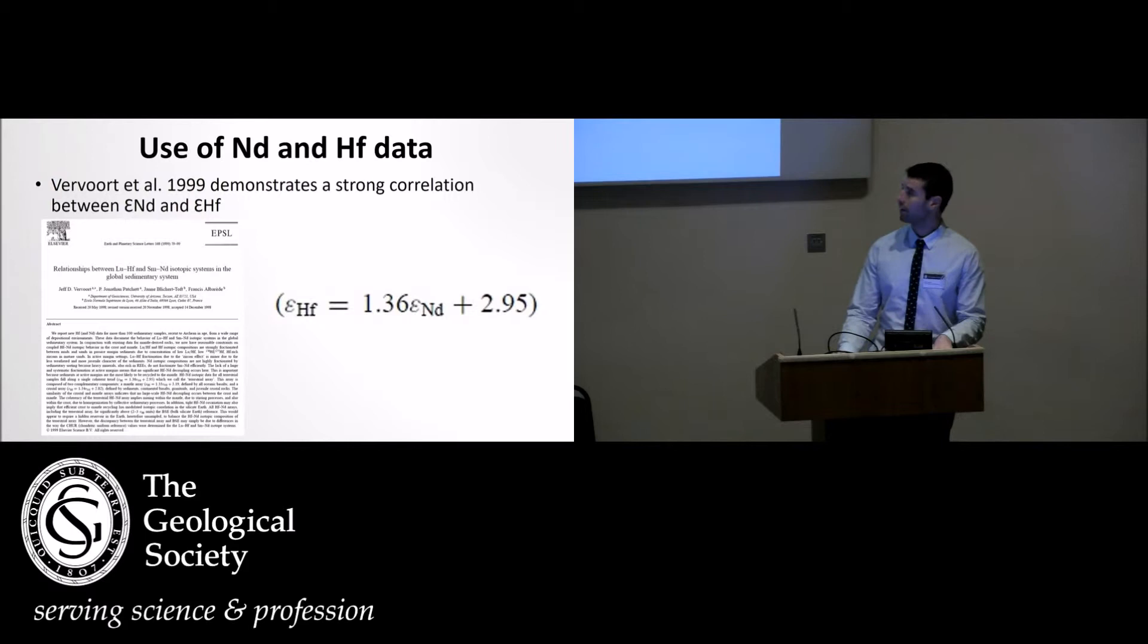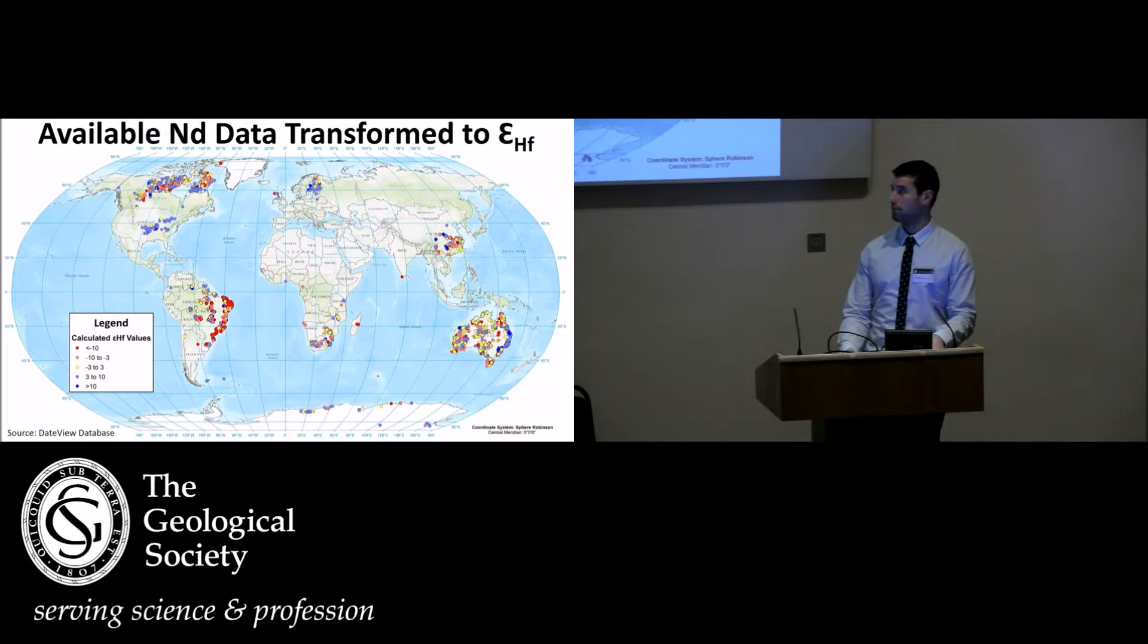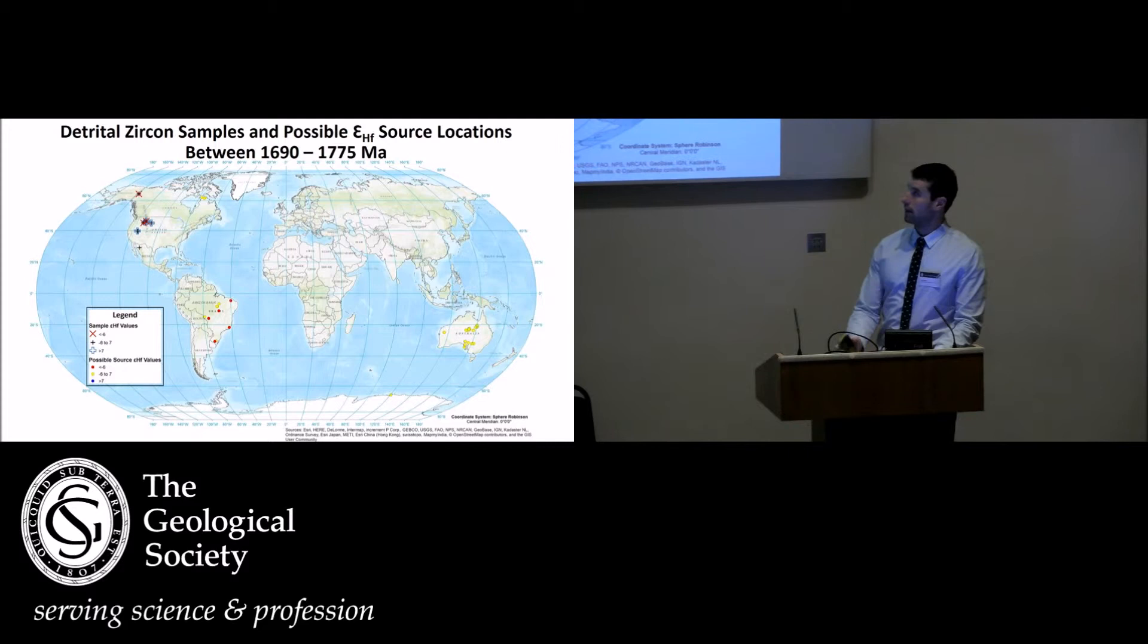I can use my supplementary neodymium isotope system data set and transform those values into epsilon hafnium values based on the work done by Vervoort et al. 1999, which demonstrates a strong correlation between epsilon neodymium and epsilon hafnium. I just use this equation here. And so plotting that globally, these are all the epsilon hafnium points that I have. It's pretty patchy, a pretty small data set.